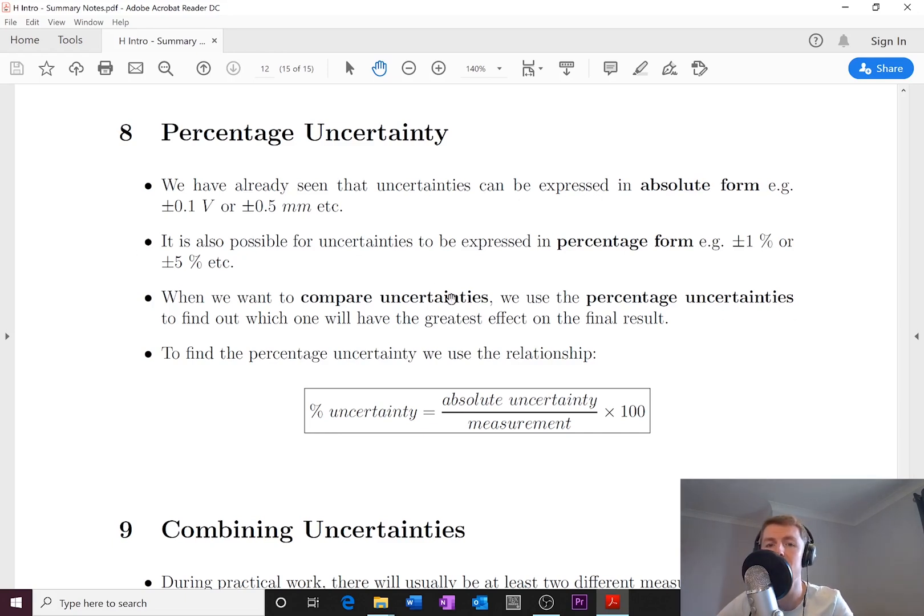The reason percentage uncertainties are really important is because we need them to compare uncertainties. So let's say I had a distance measurement with an uncertainty and also a time measurement with an uncertainty. If I wanted to calculate my speed I would do distance over time, so speed equals distance divided by time.